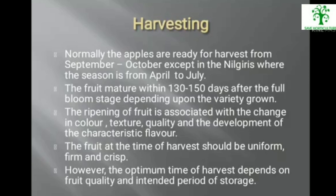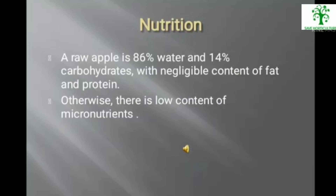The optimum time of harvest depends upon the quality and intended period of storage. Raw apple is 86% water and 14% carbohydrate, with negligible content of fat and protein. There is a low content of micronutrients. Apple is very good for lowering hypertension, beneficial for diabetic persons, and is a good source of fibre.